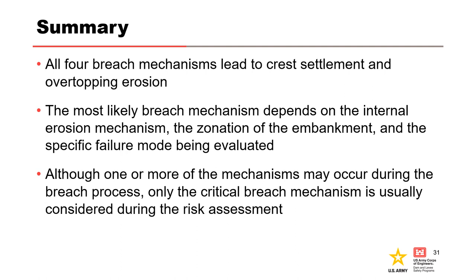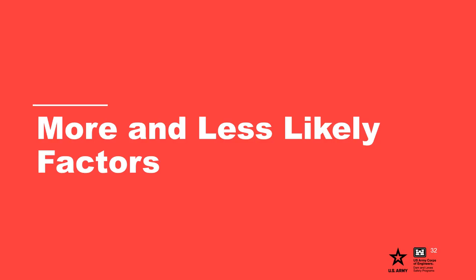In summary, all four breach mechanisms lead to crest settlement and overtopping erosion. One or more of the mechanisms may occur during the breach process, and it is generally not necessary to know precisely which mechanism or mechanisms would occur. Gross enlargement of a pipe or concentrated leak followed by collapse of the embankment, loss of freeboard, and overtopping is the most common mechanism. The following table from the best practices manual can be used to help assess the likelihood of breach. It can be used as a starting point, but the risk team must develop project-specific more-likely and less-likely factors to guide subjective probability estimation.